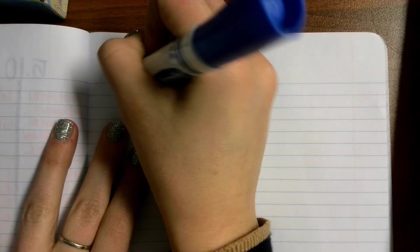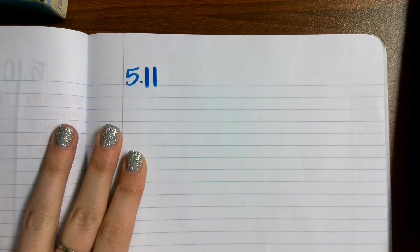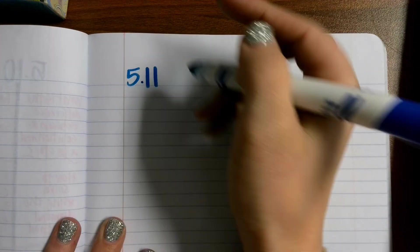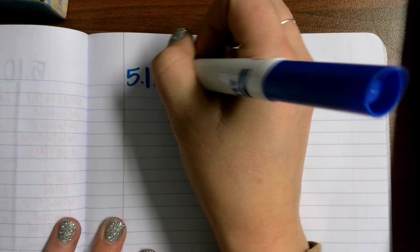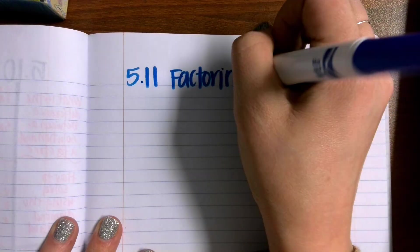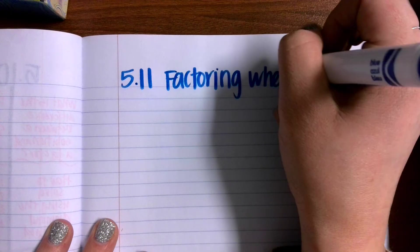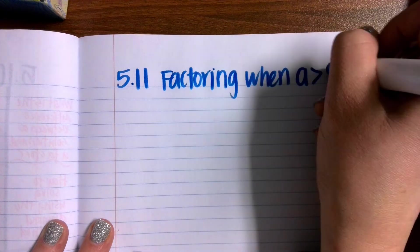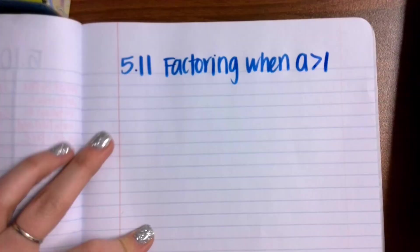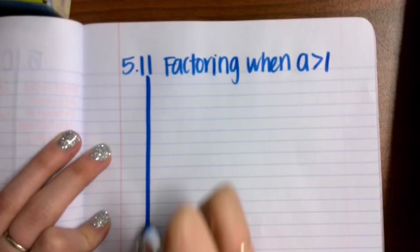Please start up at the top of a brand new sheet of paper. This should also be written in your table of contents. 5.10, factoring when A is greater than 1. This is going to be our new thing for tomorrow. Draw your line down your paper. Draw your line across.